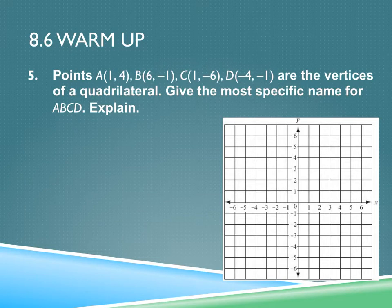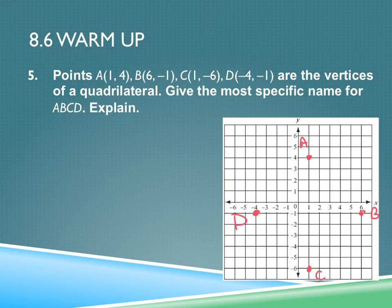Number five: points A are (1, 4), B is (6, -1), C is (1, -6), and D is (-4, -1). Those are the vertices of the quadrilateral. Give the most specific name for this quadrilateral.